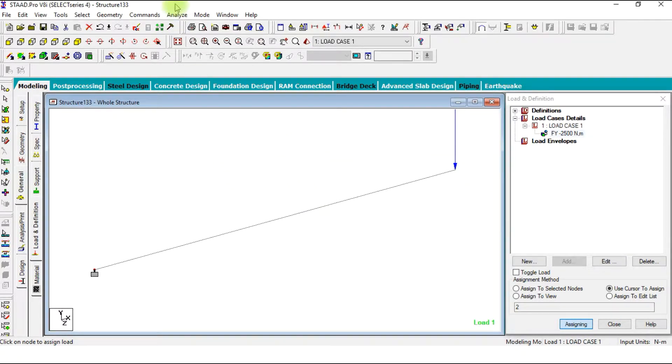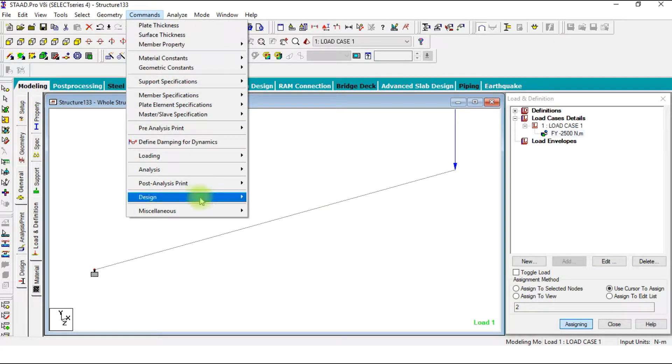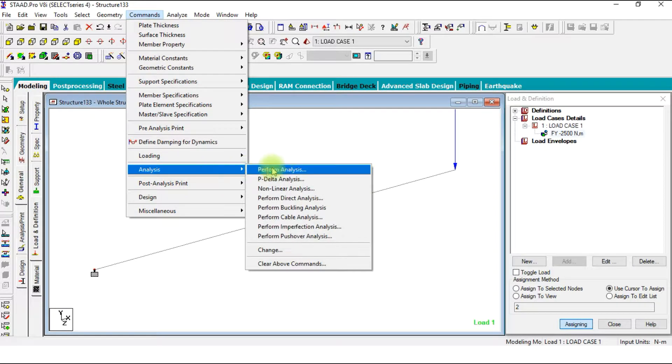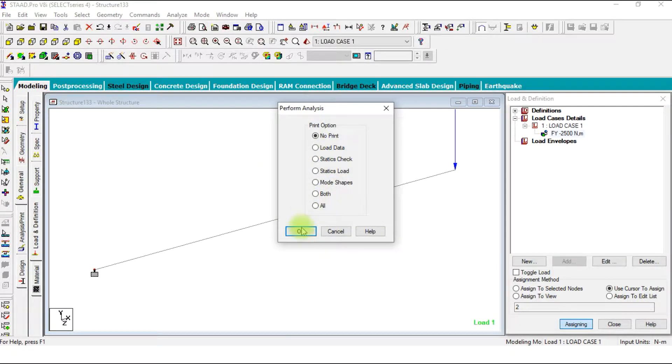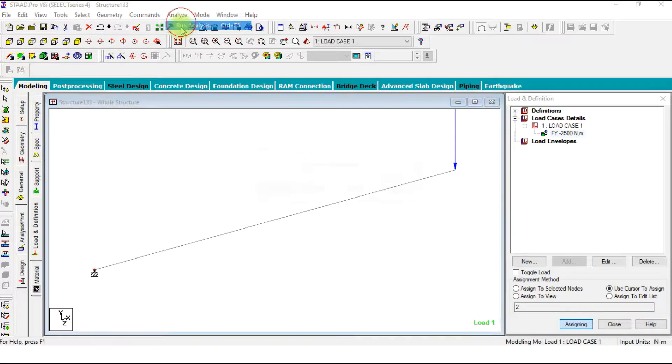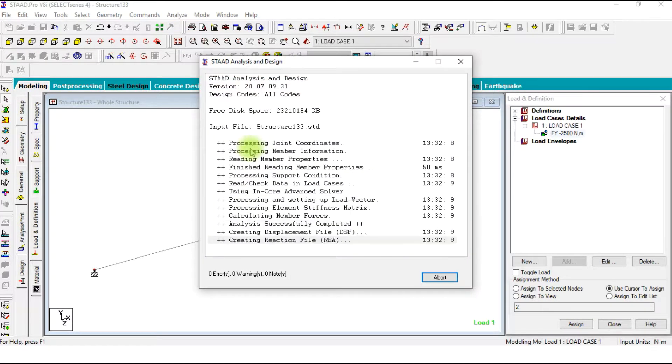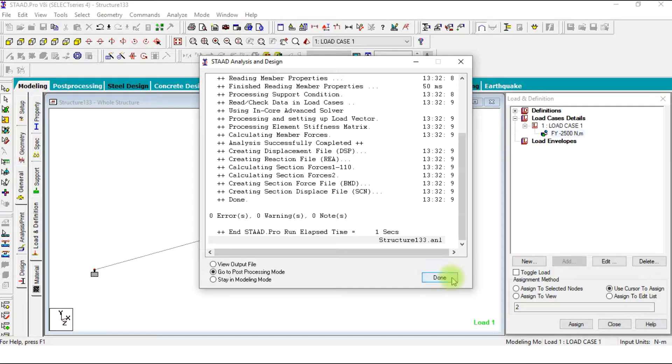Then we are going to add an analysis and analyze, then run analysis and save the project. Go to post processing mode.